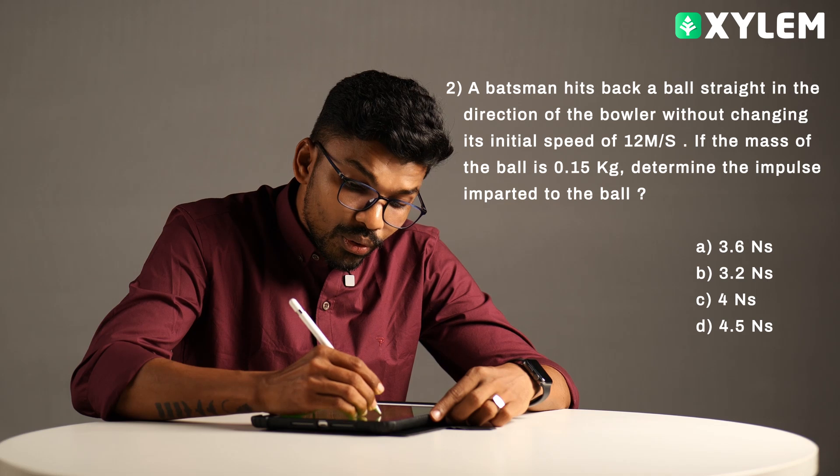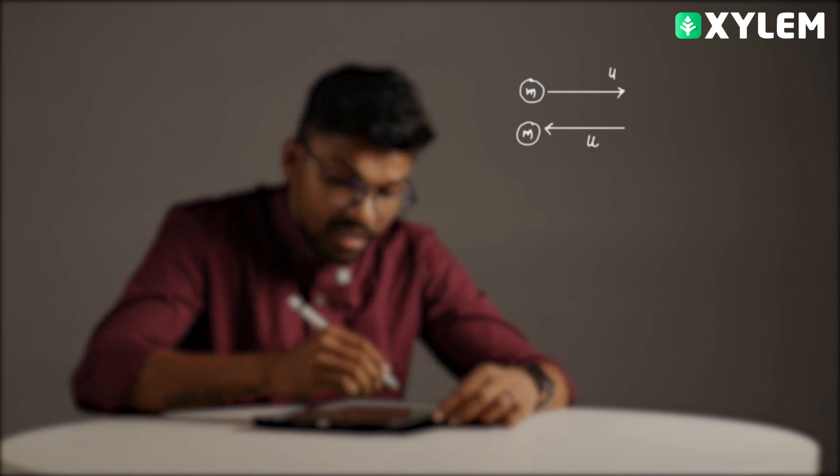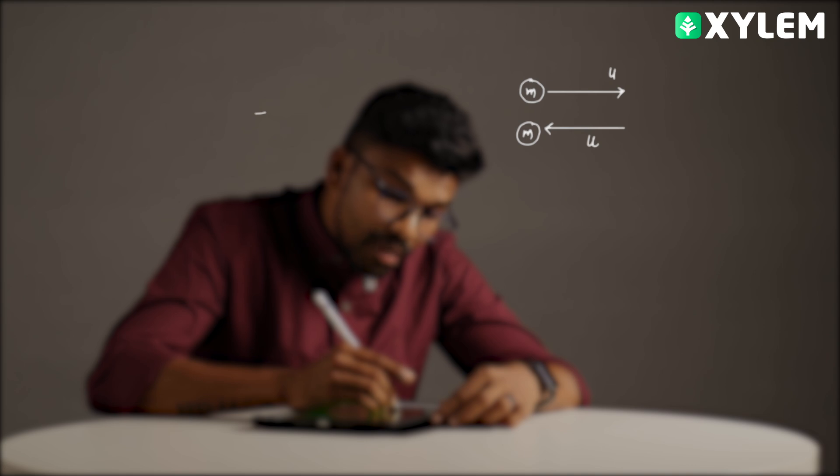In the NCERT example is 5.4. So when we are looking at the impulse imparted on a cricket ball, that is the mass m, that is the bowler with the velocity u, a batsman straight at bowler because that is the same mass of the same velocity.